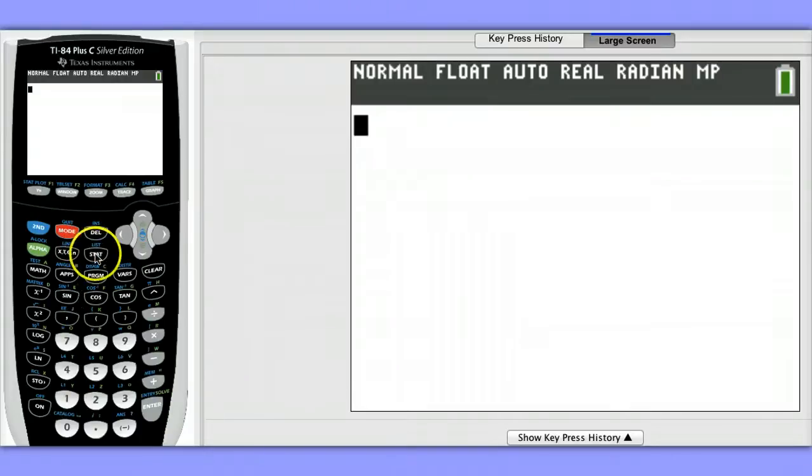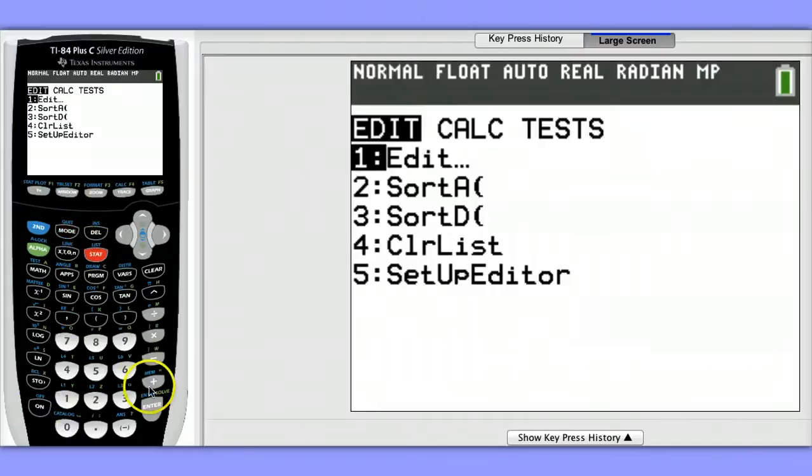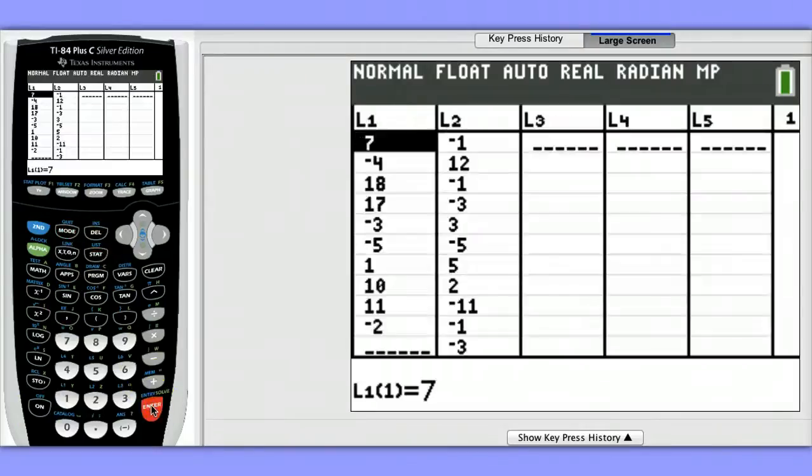To begin, hit STAT and hit Enter on Edit. You'll notice I've entered the data for Group 1, the calcium group, in List 1, and Group 2, the placebo group, in List 2. Positive values indicate a decrease in systolic blood pressure, and negative values indicate an increase. So we want to see more positive values, or a higher mean in List 1 than in List 2, if calcium does help to lower blood pressure.